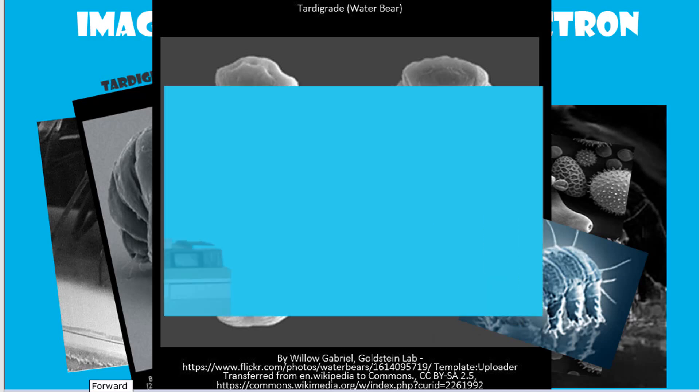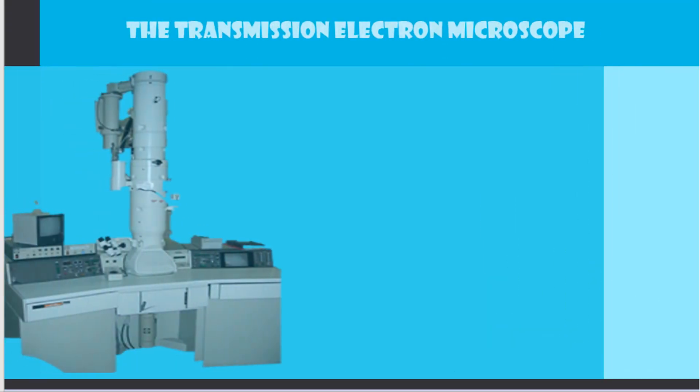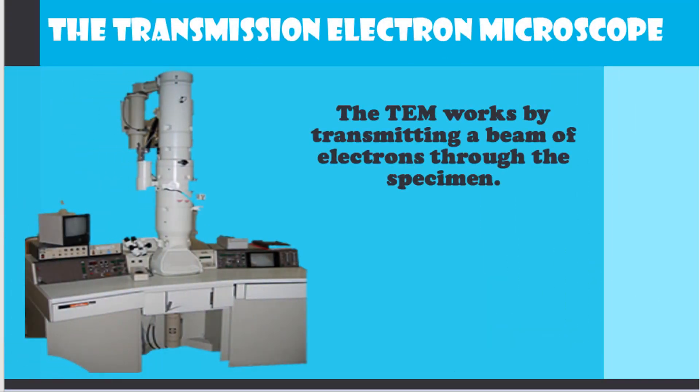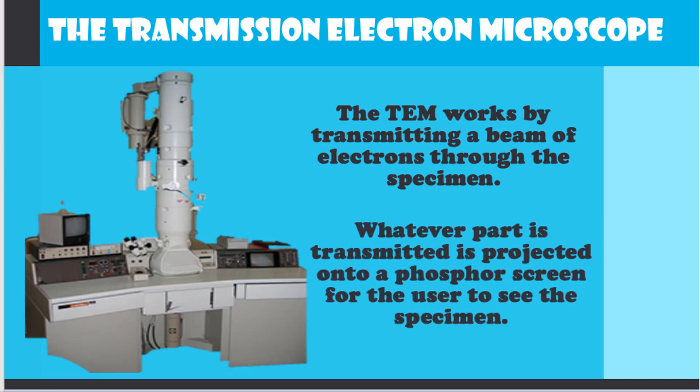The transmission electron microscope, or TEM, works by transmitting a beam of electrons through the specimen. Whatever part is transmitted is projected onto a phosphor screen for the user to see the specimen.